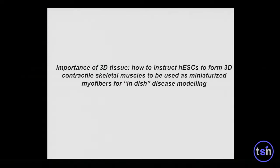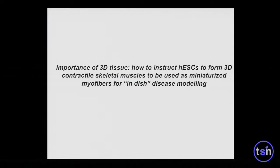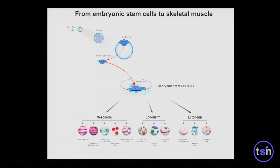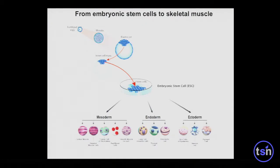One bottleneck is the idea of achieving a 3D structure that can undergo contraction. So our question was: how can we instruct human embryonic stem cells to form three-dimensional contracted skeletal muscles and miniaturized myofibers for in vitro disease modeling? A very important concept is the formation of the mesoderm.